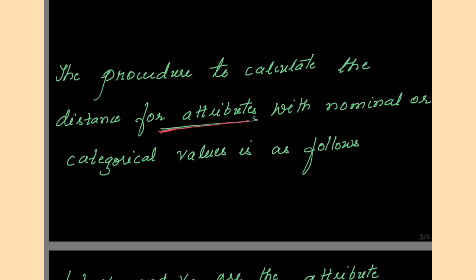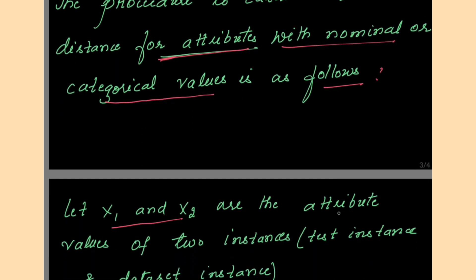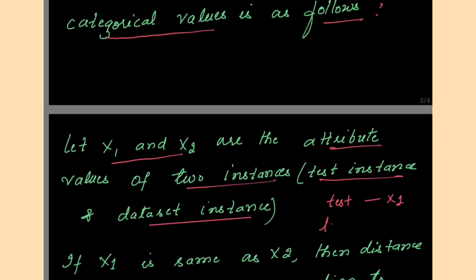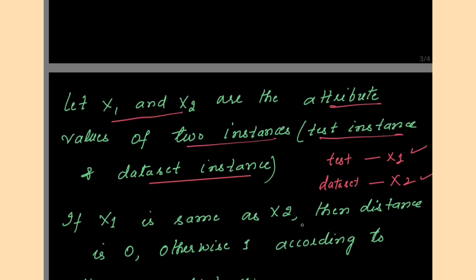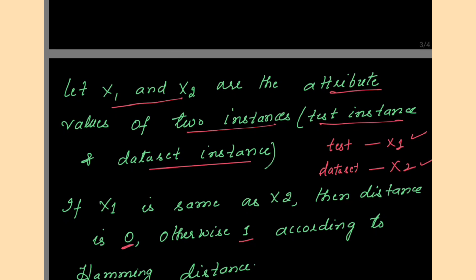The procedure to calculate the distance for attributes with nominal or categorical values is as follows. Let x1 and x2 be the attribute values of two instances — the test instance and the dataset instance. Here we are having categorical values. If x1 is the same as x2, then the distance is 0; otherwise it is 1, according to the Hamming distance.